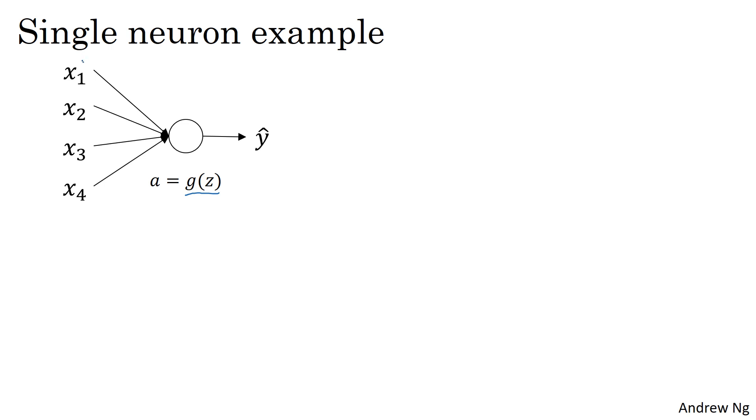And later on for a deeper net, these inputs will be some layer a of l. But for now, let's just call this x for now.